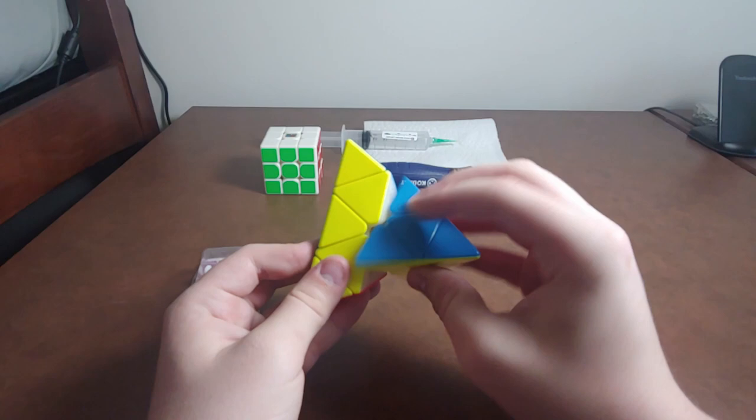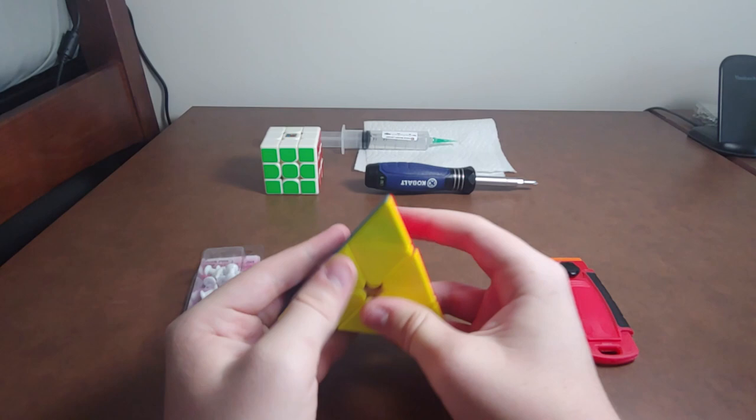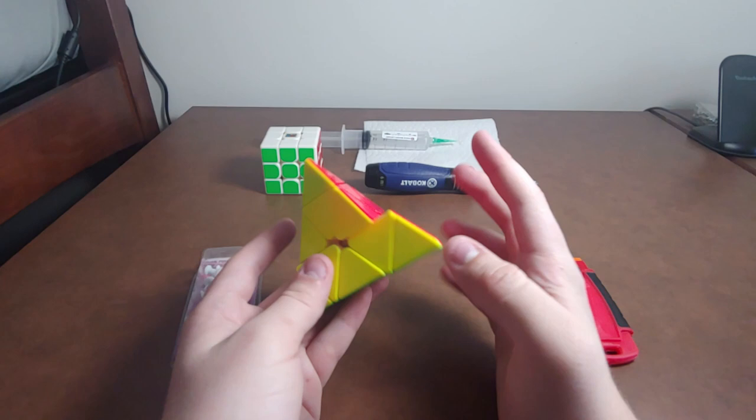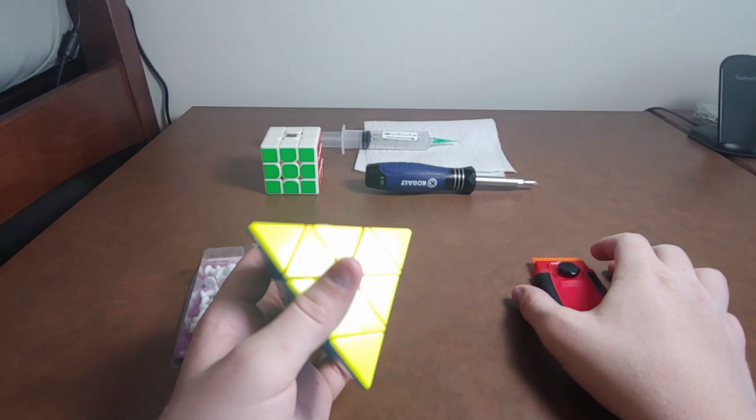So out of the box this puzzle is very smooth, pretty quiet, and it pops pretty easily. In addition to popping, it's sort of unstable. One of the mods is going to fix both of those issues and the other one will make the tips a more reasonable strength because they are very strong out of the box.